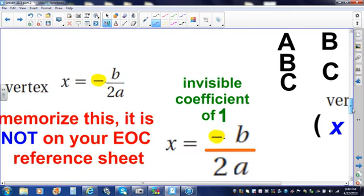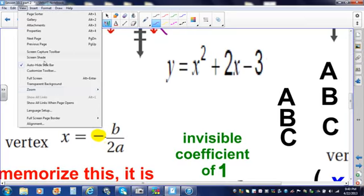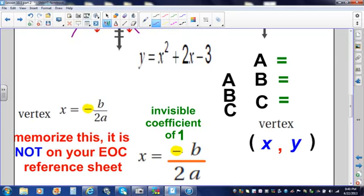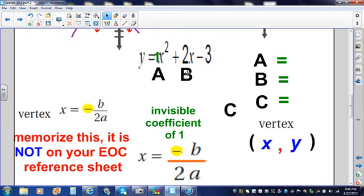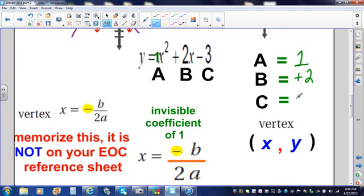To find the vertex, we are going to label our trinomial with the letters ABC from the alphabet. So, once again, A is going to be that invisible coefficient of 1, B is going to be 2, and C is going to be negative 3. Now, remember, this formula for the vertex is not on your EOC reference sheet, so you have to remember, X equals negative B over 2A.